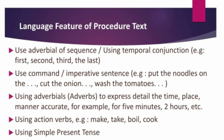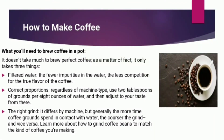The language features of procedure text are: use simple present tense, use temporal conjunctions, use action verbs, use imperative verbs, and use adverbials. Temporal conjunctions or adverbials of sequence — for example: first, second, third, and last. Use command or imperative sentences — for example: 'Put the noodles,' 'Cut the onion,' 'Add the tomatoes.' Use adverbs to express detail of time, place, or manner — for example: 'for 5 minutes,' '2 hours.' Use action verbs such as: make, take, boil, cook. And use simple present tense.